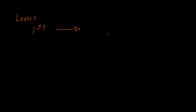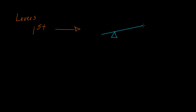For first class levers, you're going to have a pivot point — I'll represent that by this little triangle — with the pivot point in between your input and output for that lever. The pivot point is called the fulcrum, and that's the point which is stationary; it's not going to move either way.